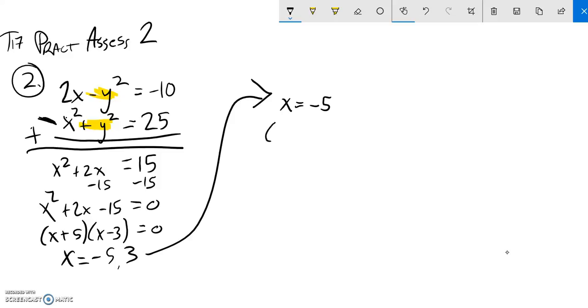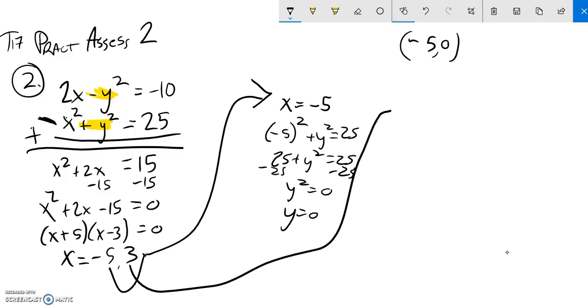X squared, so negative 5 squared, plus y squared equals 25. Negative 5 squared is positive 25. Subtract 25 from both sides and y squared is 0, which means that y is 0. So when x is negative 5, y is 0.